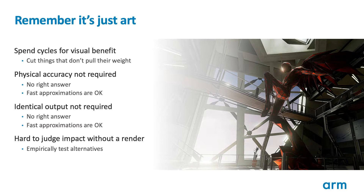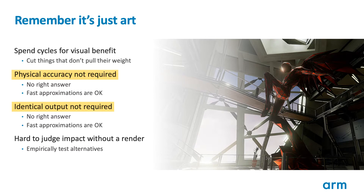Ultimately, as graphics developers, we are artists building great-looking pictures. The principle of 'if it looks good, it is good' applies — there is no right answer for the journey we took to get there. For optimization, this gives game developers a lot of scope to bend the rules. Using approximations is okay, provided the results are visually appealing, and point optimizations generally do not need to be bit-exact. It can be hard to judge the visual impact of such tradeoffs without actually testing the change and measuring the impact on the scene, so graphics optimization is usually an iterative process of experimentation and try-and-see.